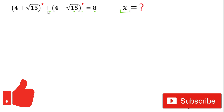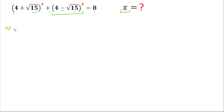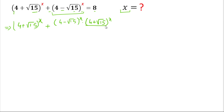Let's start the video. For solving this expression, we have 4 + √15. To handle the negative values and make them positive, we'll multiply the second term by its conjugate value. So we write (4 + √15)^x as it is, and in the second term (4 − √15)^x we multiply by (4 + √15)^x. Since we multiplied in the numerator, we also divide by (4 + √15)^x, and that equals 8.